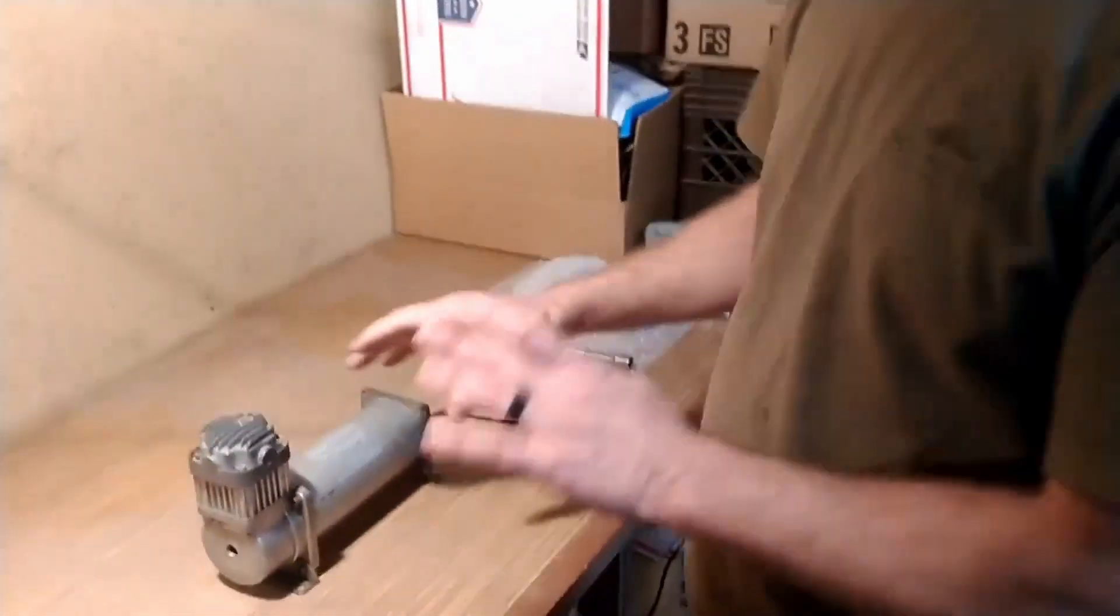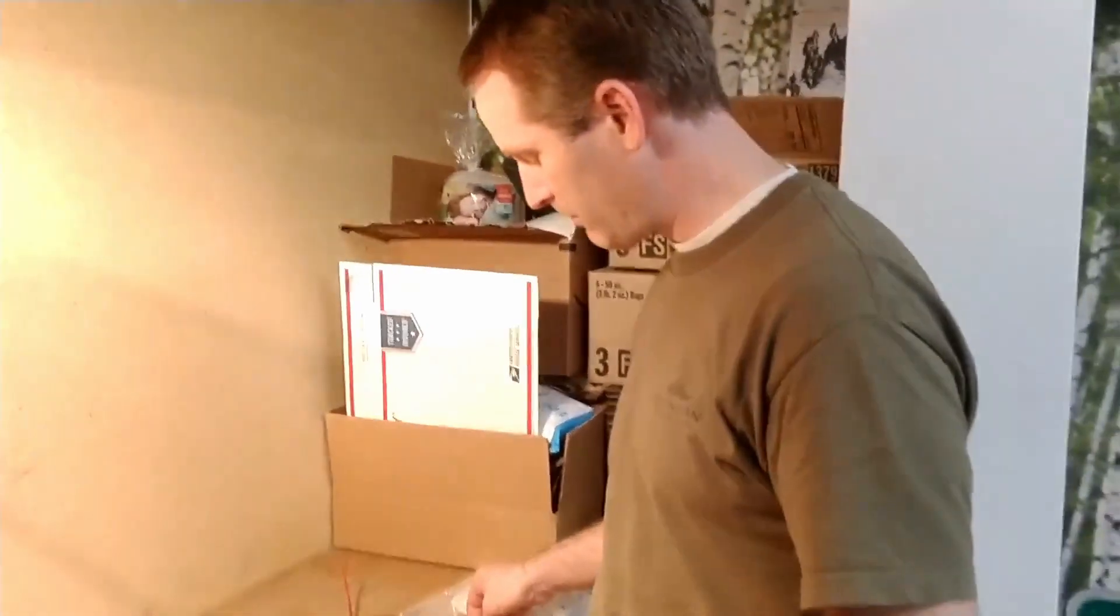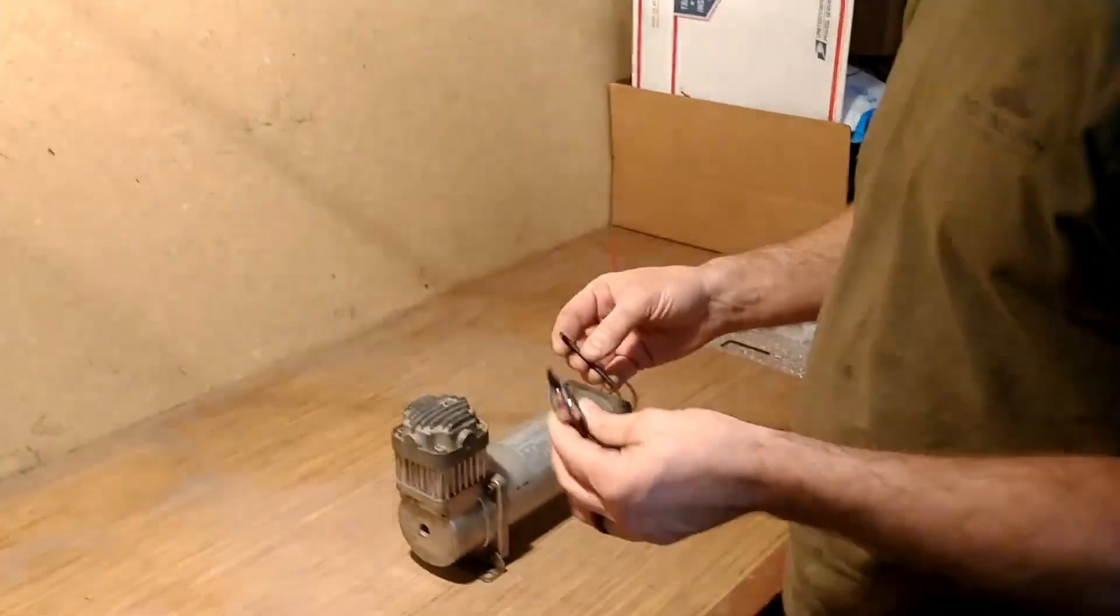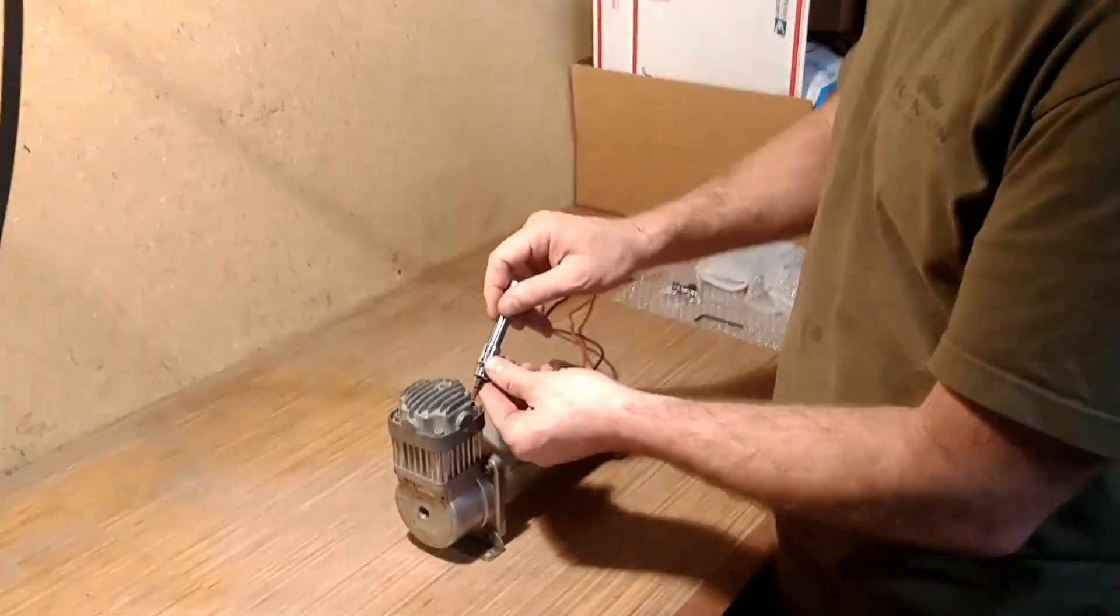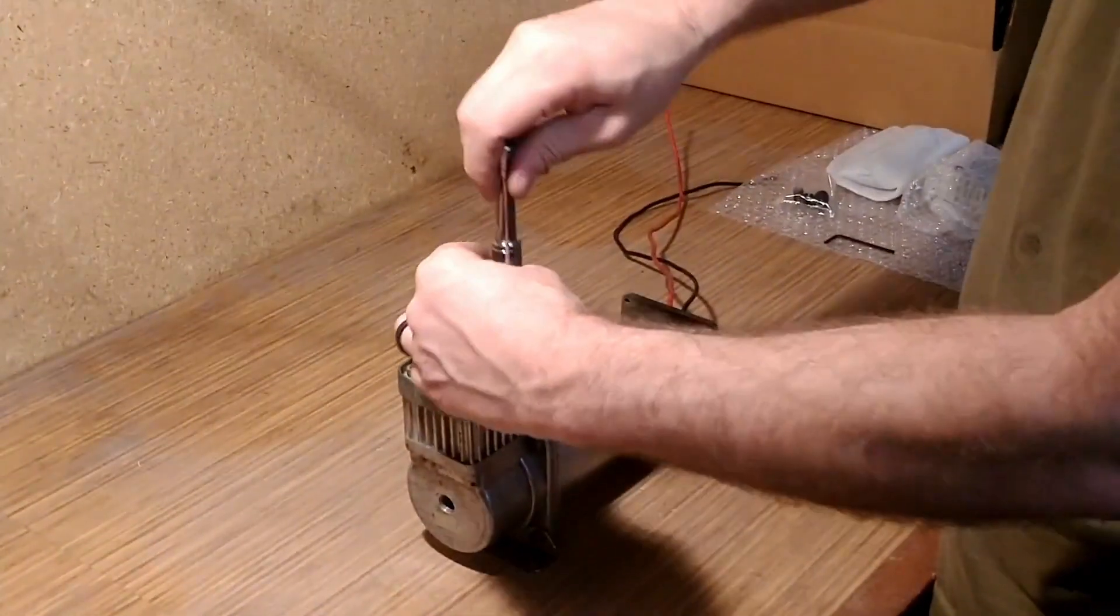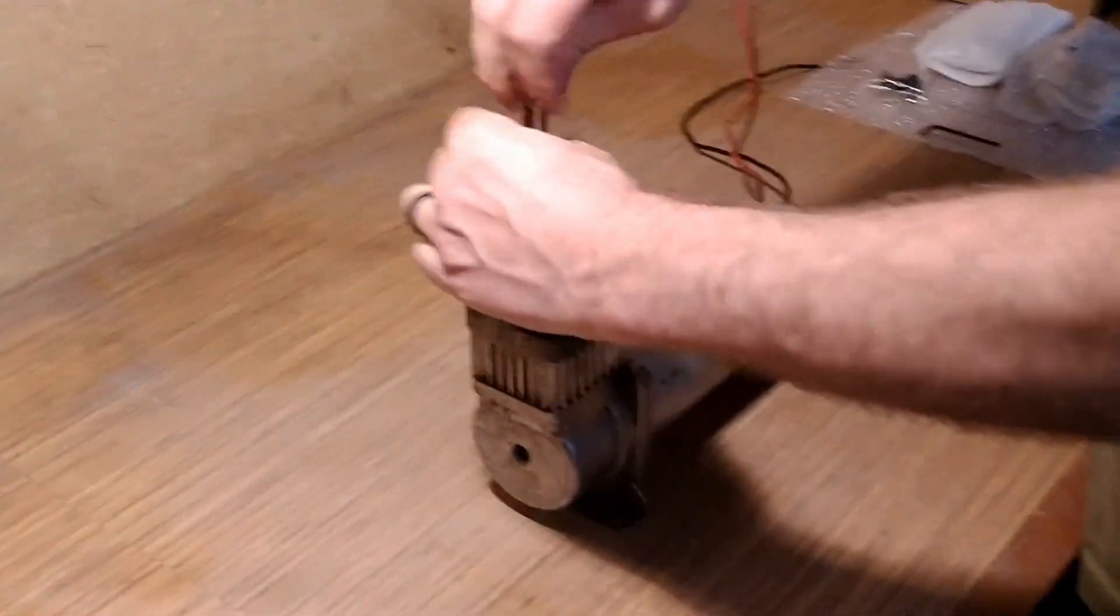I'm going to go ahead and quickly undo everything and take it apart so you can see the different components and the problems that we have with it. It's going to be a 4mm or 5/32nd Allen. Those are the ones that I have that fit. I'm going to take the head off with these four long screws.